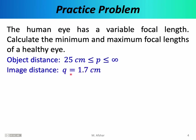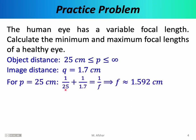We can say that P must be greater than or equal to 25 centimeters and less than or equal to infinity. The image distance Q is determined by the anatomy of the human eyeball, so Q must be 1.7 centimeters. Given P and Q, we can calculate F using the thin lens formula: 1/P + 1/Q = 1/F. Looking at a nearby object at the near point of a healthy eye — 25 centimeters — we find that the focal length must be 1.592 centimeters.